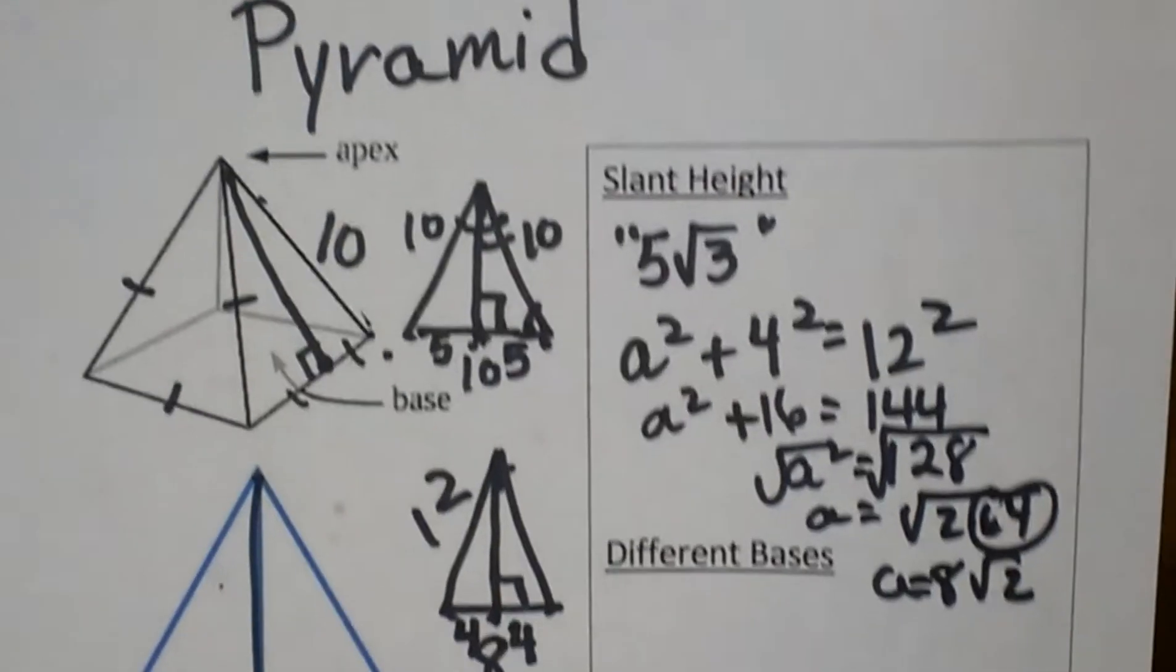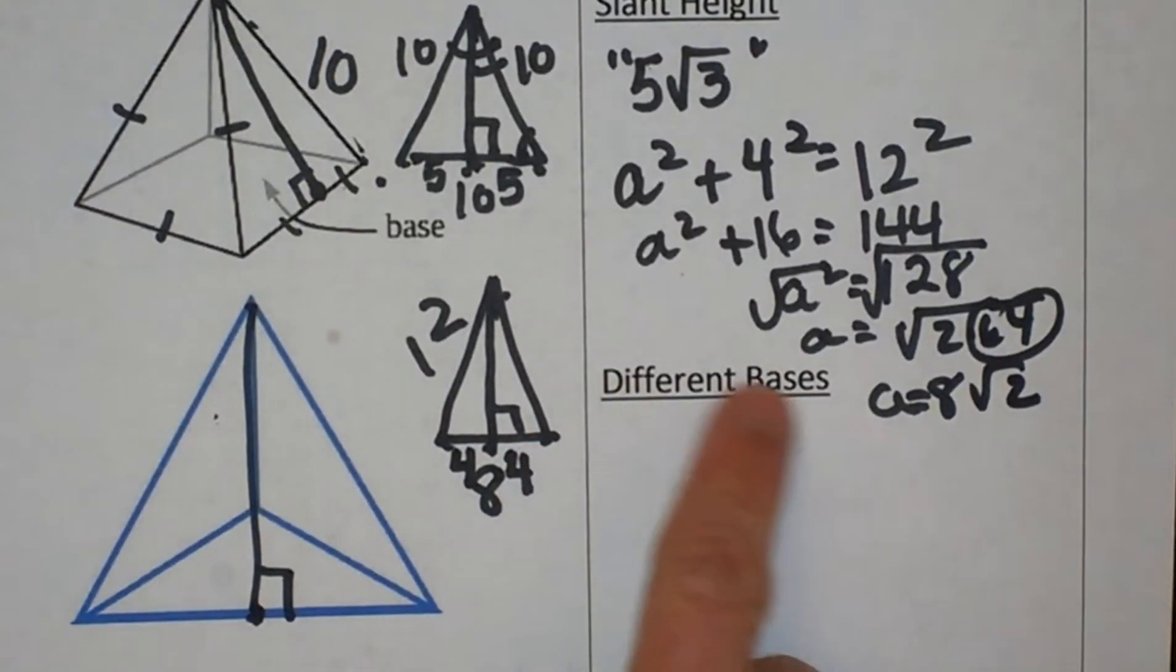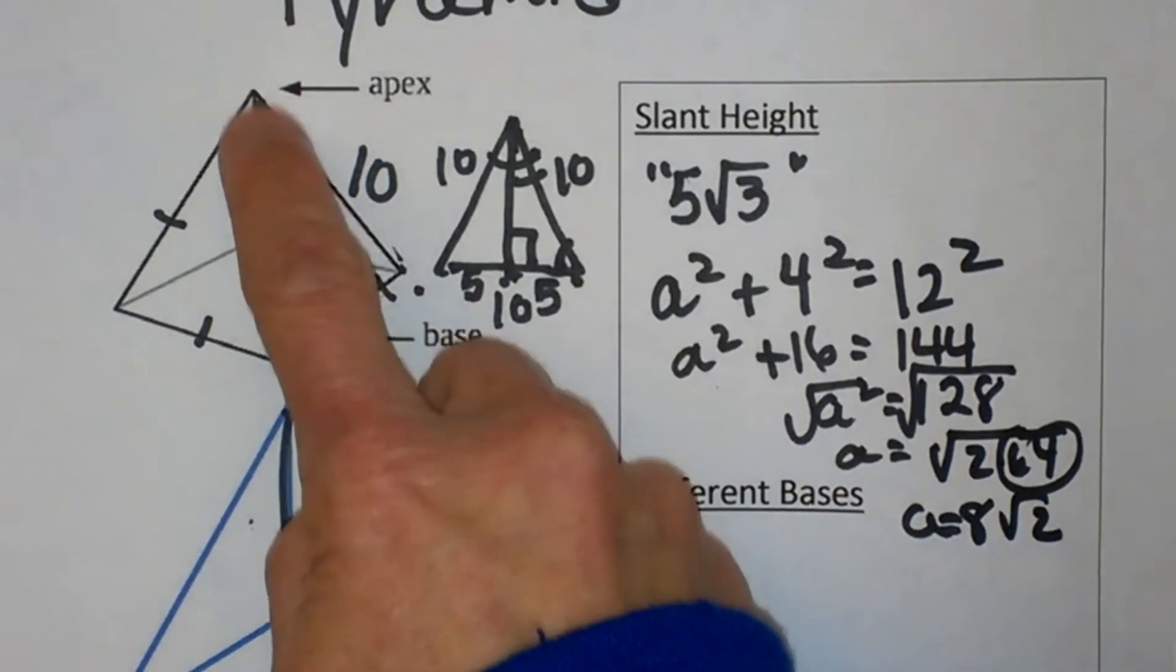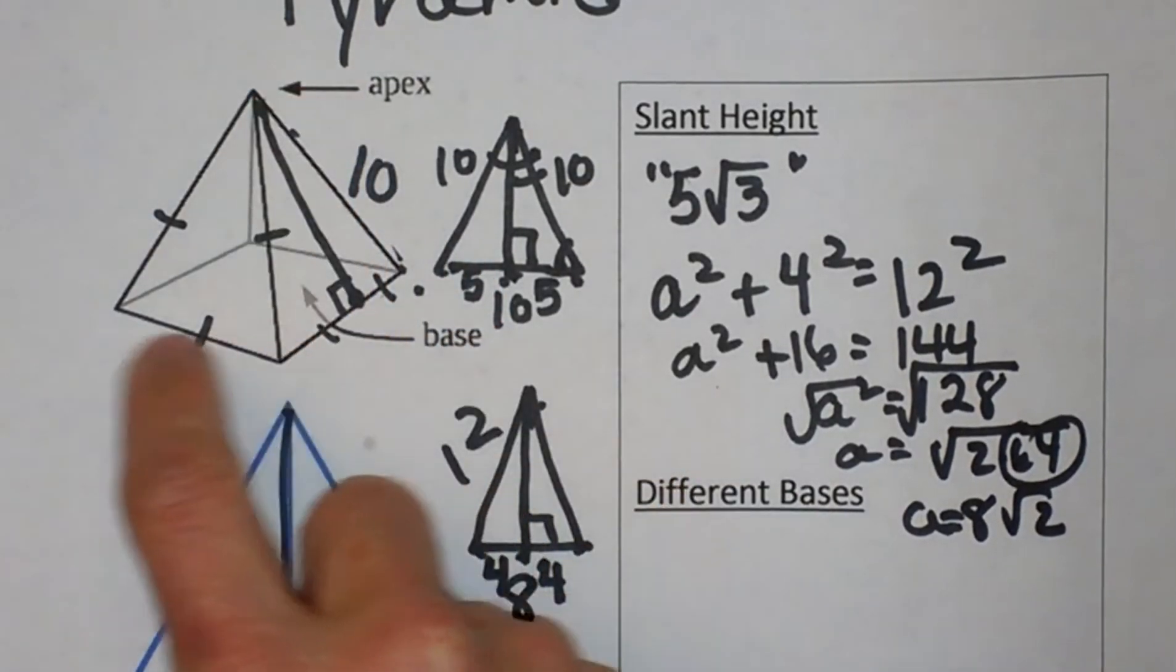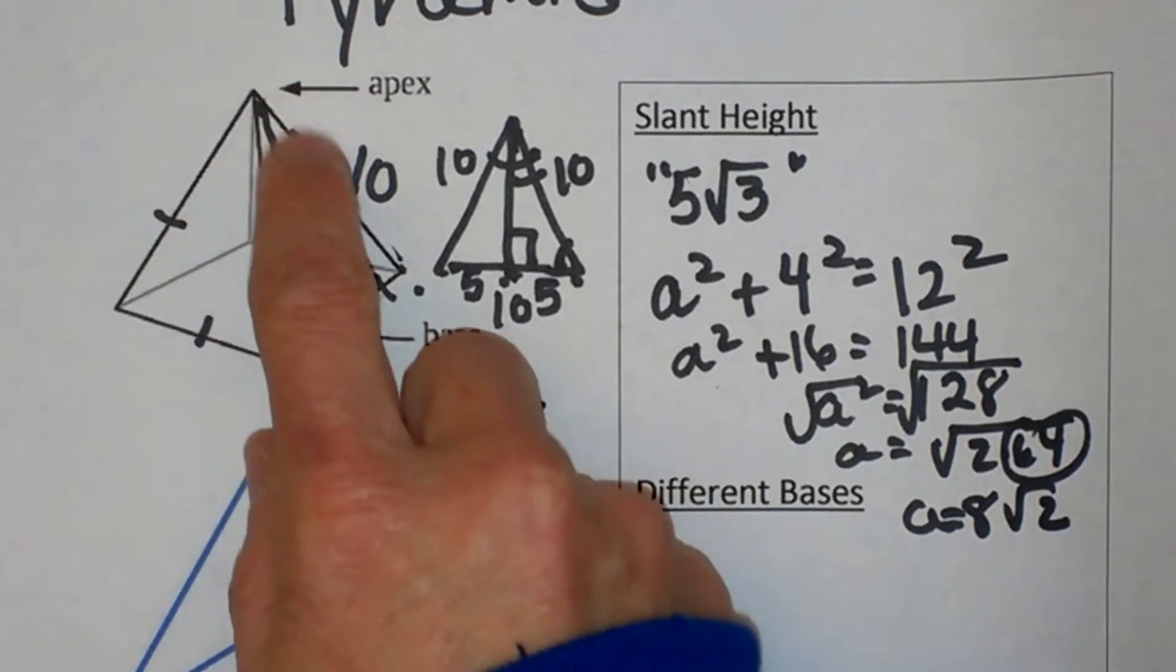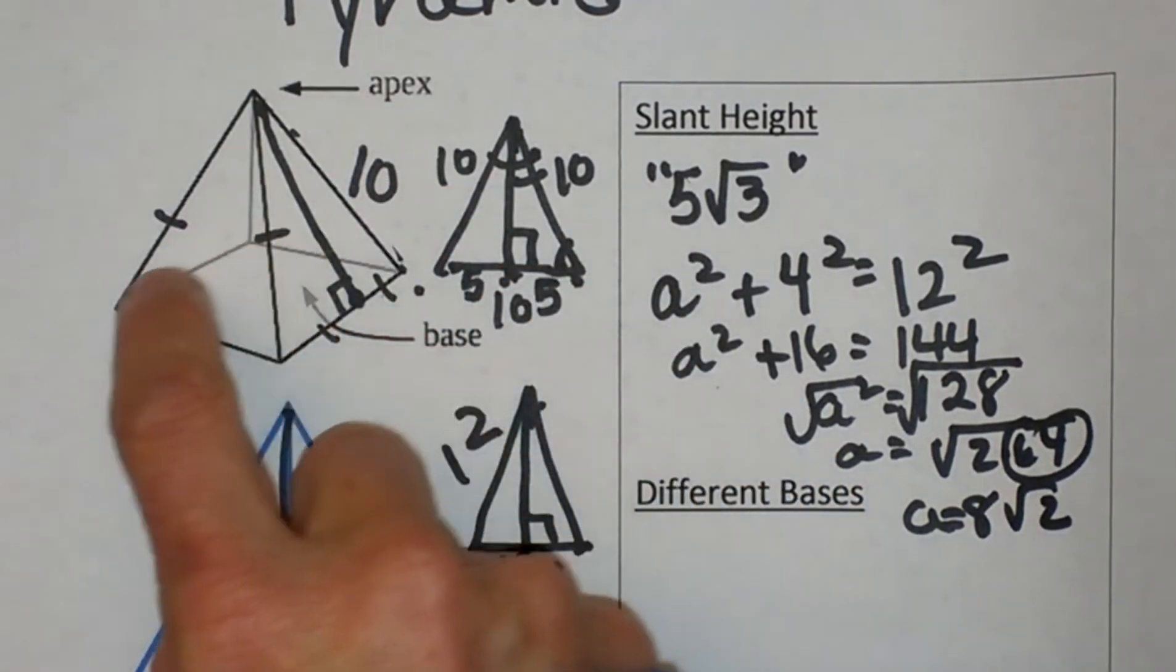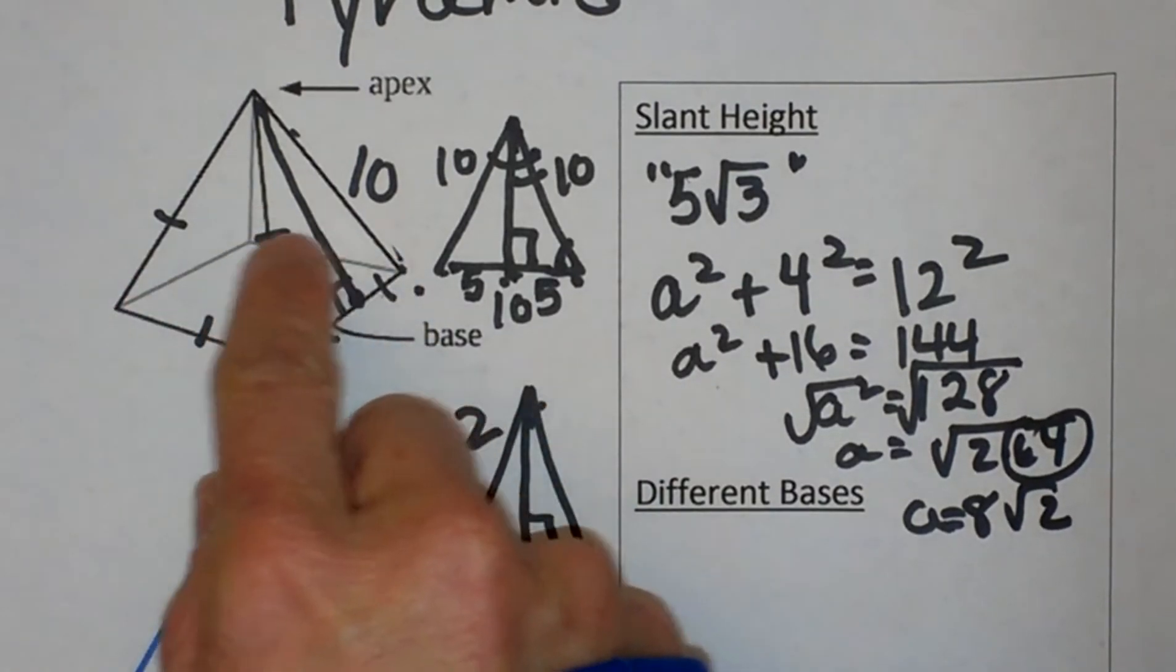We have to focus right now on different types of bases. So let's look at the faces of a pyramid. A pyramid is constructed of triangles along the outside. That's called the lateral area, and then we have a base, which is what the pyramid sits on.